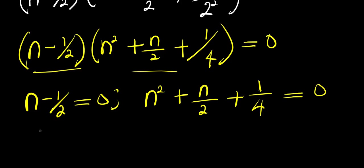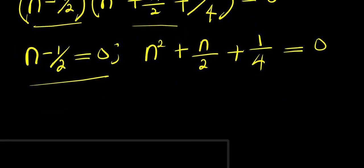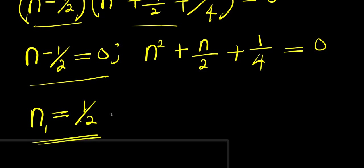Let's start with the first one. If n minus 1 over 2 equals 0, that means n equals 1 over 2. That is my n₁.